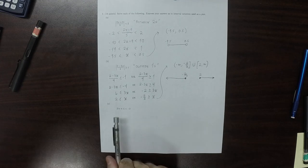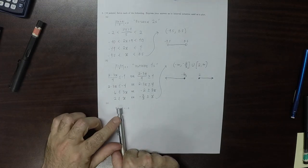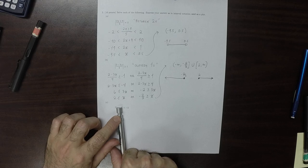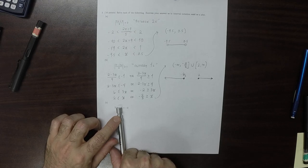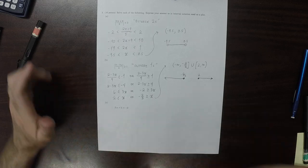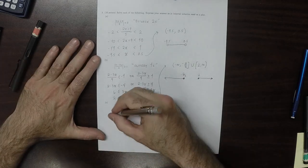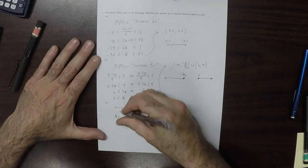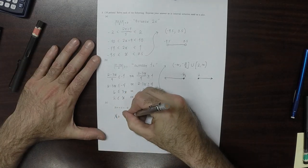For the final part, you can ask: is there anything in principle you could put into the absolute value so that something smaller than negative 2 would come out? The answer is no — the answer is no solution.